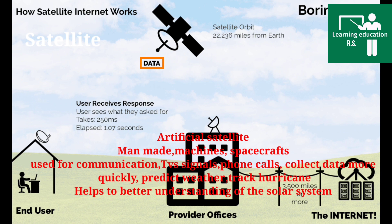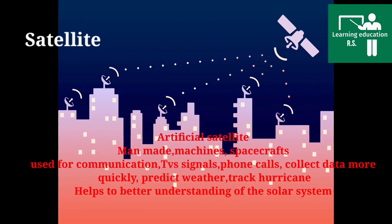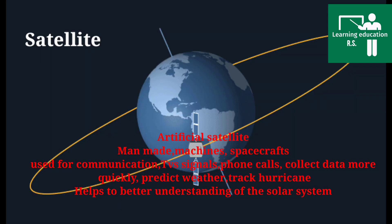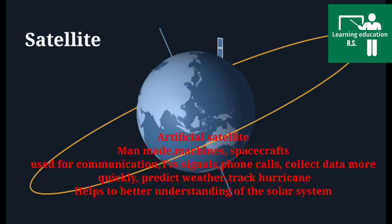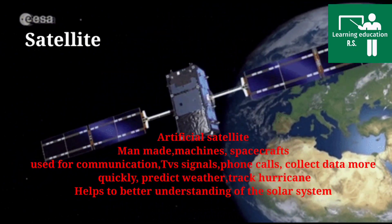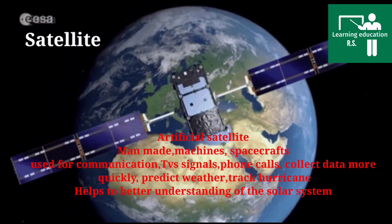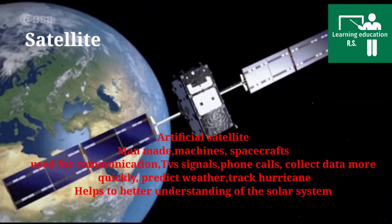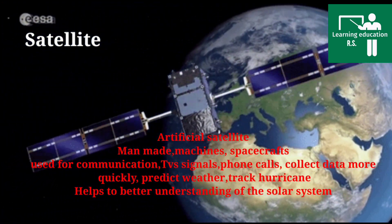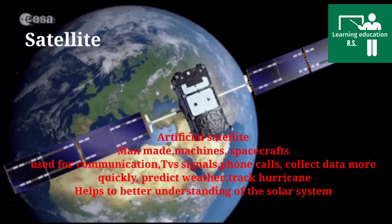Satellites can see into space better than telescopes from Earth's surface. We can understand space better with satellites because they fly above the clouds and atmosphere. This helps us collect more data and see things better. These are the benefits of satellites.